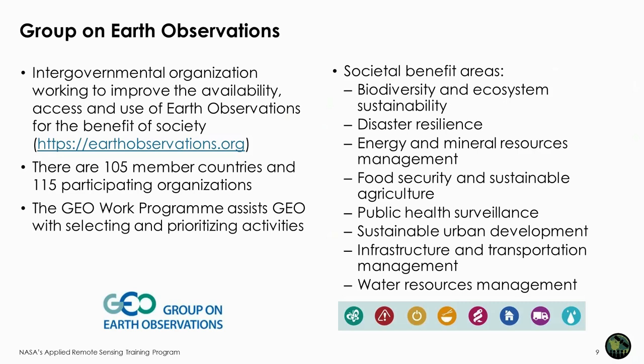Thank you, Josh. That brings us to the Group on Earth Observations. The Group on Earth Observations, or GEO, is comprised of 105 member countries with a goal to improve the availability, access, and use of Earth observations for the benefit of society. The GEO Work Program selects and prioritizes activities under eight different societal benefit areas listed here. Wildfire activities fall under disaster resilience.